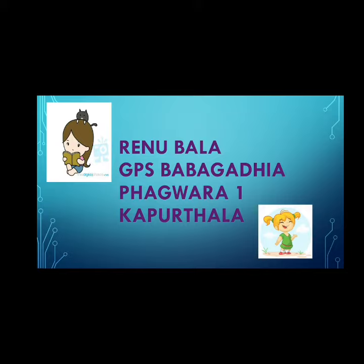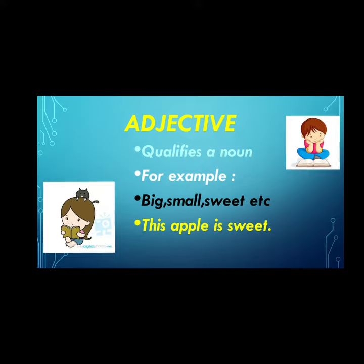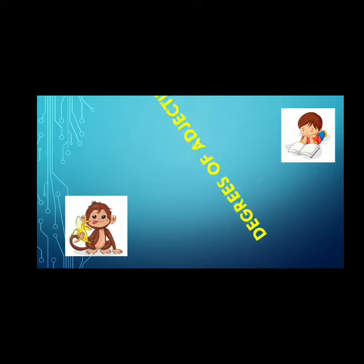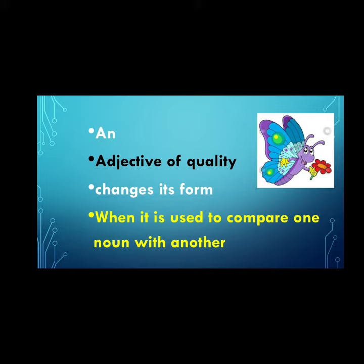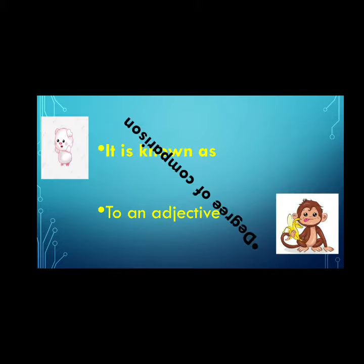Students, till now we have learnt what the adjectives are. It qualifies a noun. For example, this apple is sweet. Here sweet is adjective to apple. Now today we are taking a subtopic of adjectives — that is degrees of adjectives. When we compare one noun with another, the adjective of quality changes its form, and it is known as degree of comparison of an adjective.